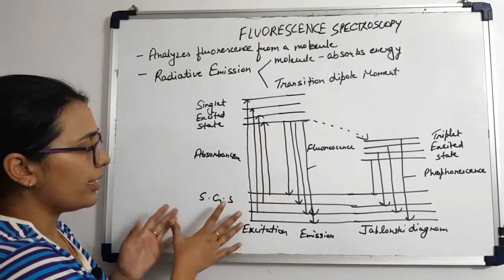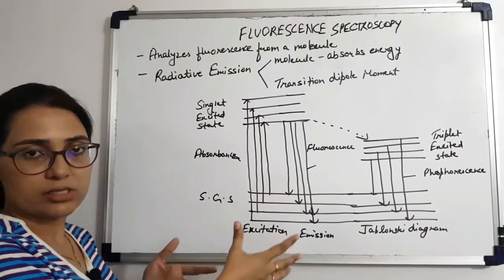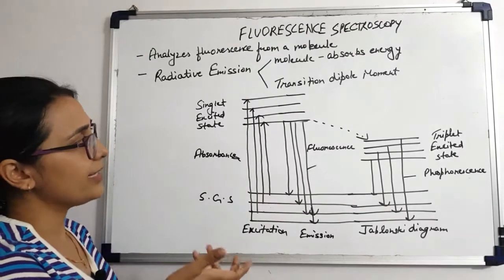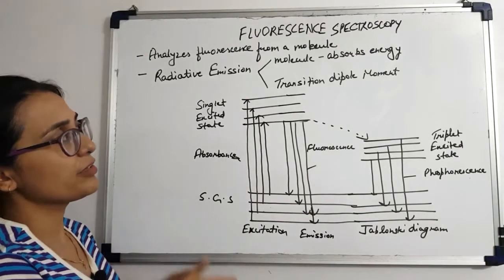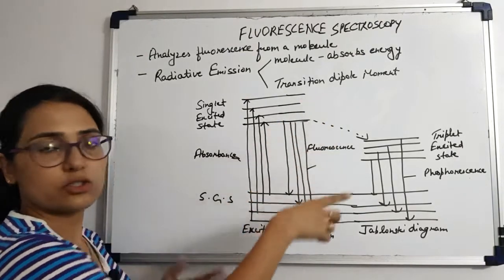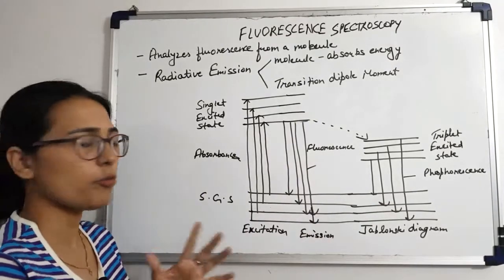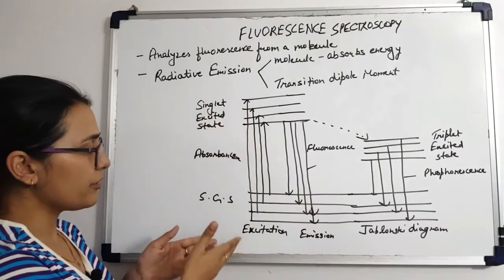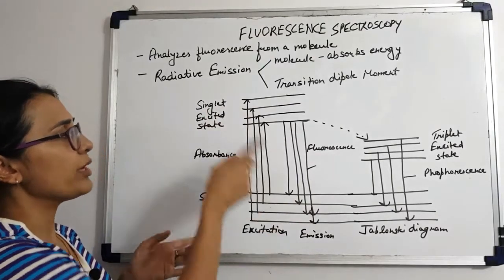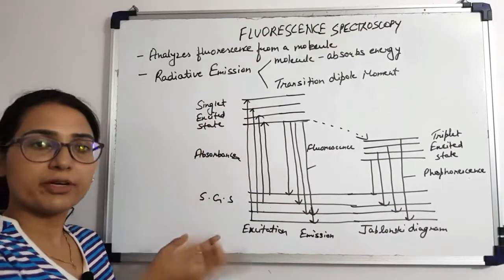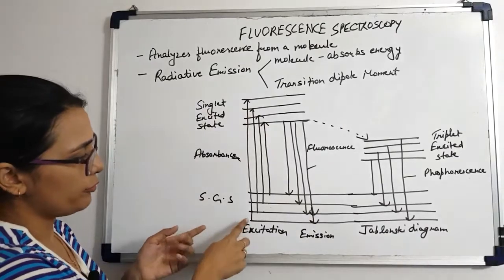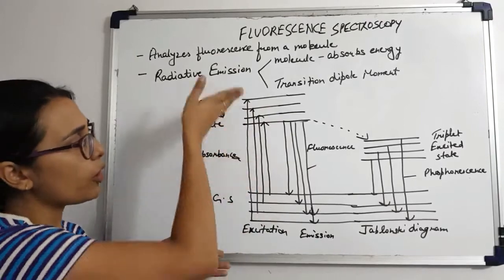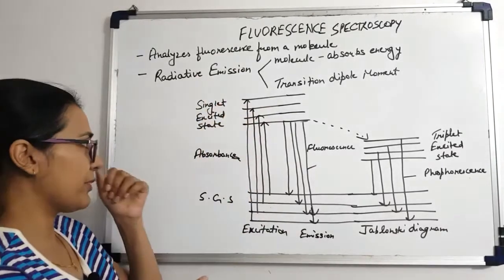The electrons present in the singlet ground state are going to absorb energy in the form of ultraviolet light, and that energy should be at a wavelength where the molecule has a transitional dipole moment, so it is capable of moving from the ground state to the excited state. When different electrons move from the ground state to the excited state, they are going to move to different vibrational levels — one electron moves to this vibrational level, another one moves to a different one.